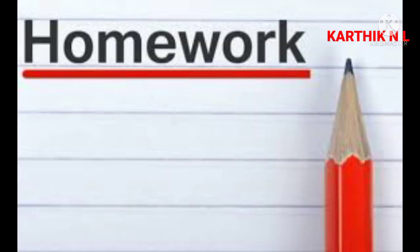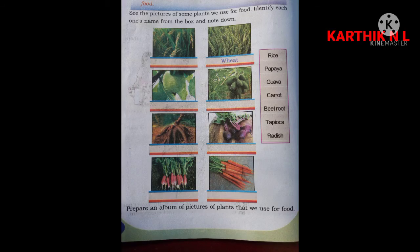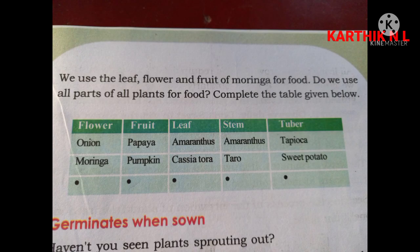OK children, now you have homework. Take page number 14. See the pictures of some plants we use for food, identify each one's name from the box, and note it down. Next homework: take page number 15. Complete the table given below — there is flower, fruit, leaf, stem, tuber — all have two answers, you have to write another one example.